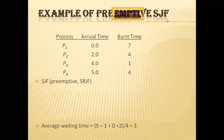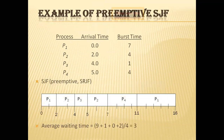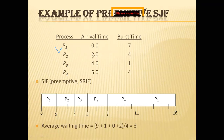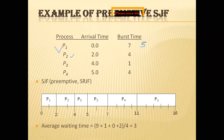For preemptive SJF scheduling with the same processes and burst times, at 0 milliseconds P1 arrives and gets the CPU. At 2.0 milliseconds, P2 arrives. The remaining burst time for P1 is 5 milliseconds (since 2 ms have already been executed). P2's burst time is 4, which is less, so the CPU is preempted and allocated to P2. At 4 milliseconds, P3 arrives. P2 has 2 milliseconds remaining and P3 has 1 millisecond, so the CPU is given to P3.